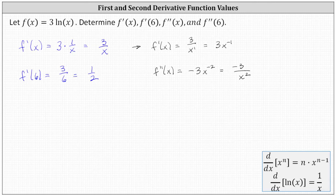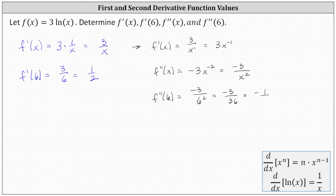Finally, we can find f double prime of six by substituting six for x into the second derivative function. f double prime of six is equal to negative three divided by the square of six, which is equal to negative three divided by thirty-six. There is a common factor of three between three and thirty-six, so the fraction simplifies to negative one-twelfth.